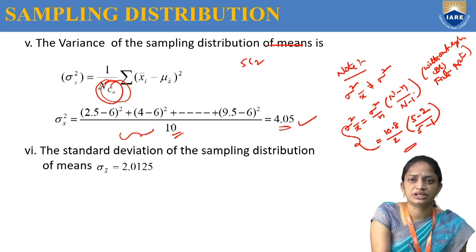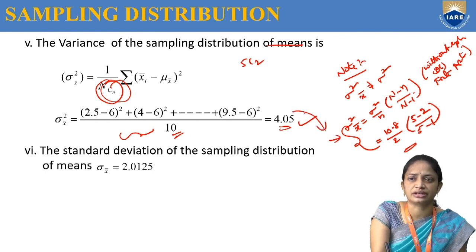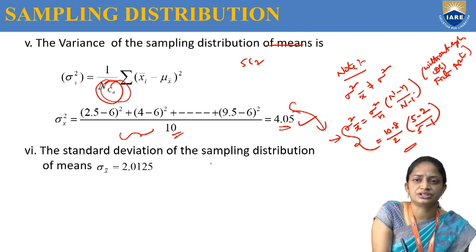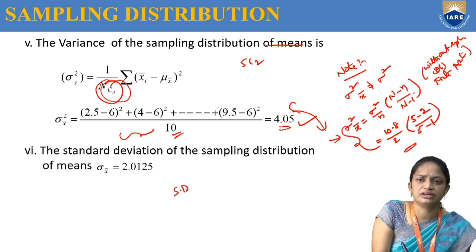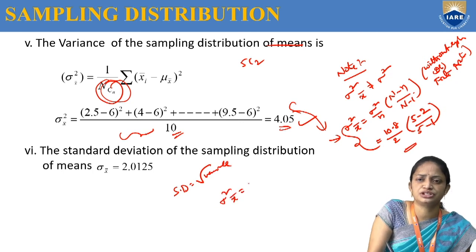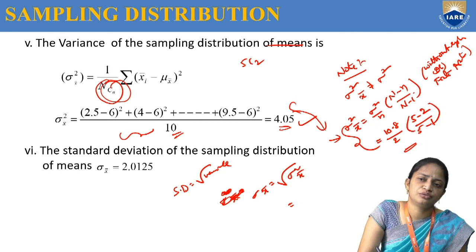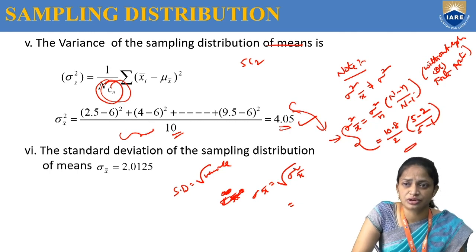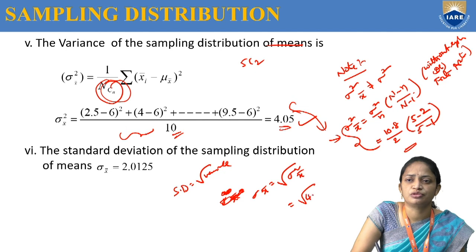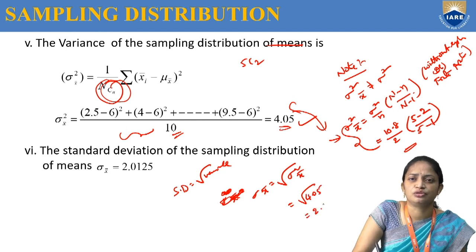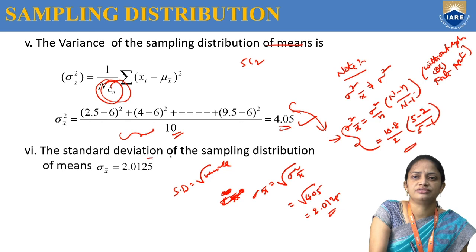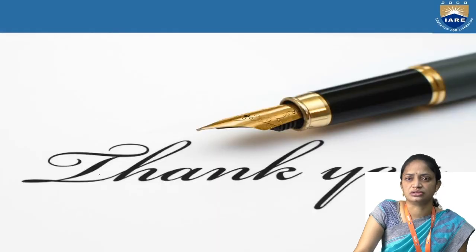Finally, the standard deviation of the sampling distribution is sigma x-bar equals the square root of sigma squared x-bar, which is the square root of 4.05, giving approximately 2.01. This is the standard deviation of the sampling distribution for the without replacement case. Thank you.